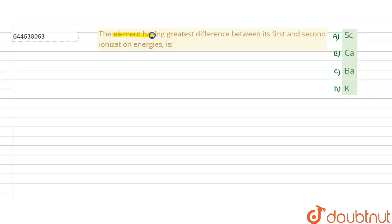Hello student, the problem is: the element having greatest difference between the first and second ionization energies. So these are the following elements.